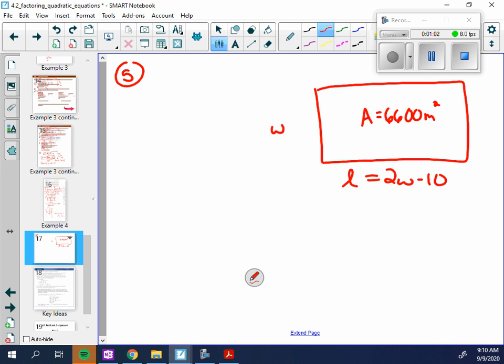All right, we don't have a formula that they gave us, but we have one in our minds. What's our formula that we would use for area? Length times width, right? So area equals length times width. So I know my area is 6,600. I know my length. I can replace it with 2w minus 10. And then my width, I would just leave it as w. Now the reason why I wanted to replace one of those is all of our quadratics that we're solving should only have one variable in them.